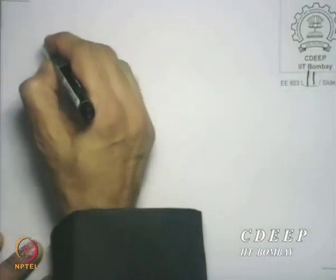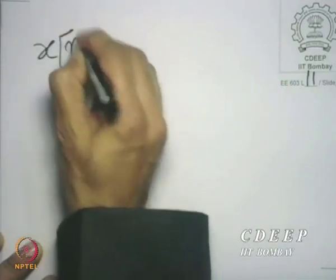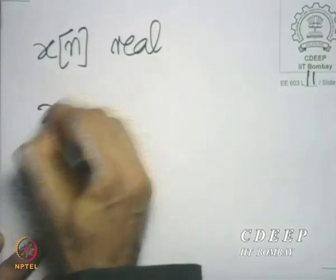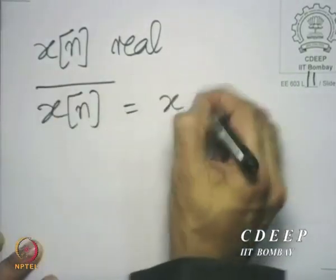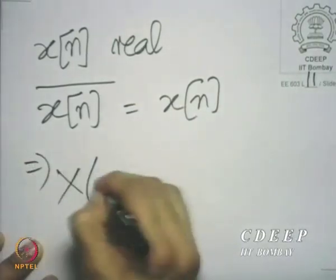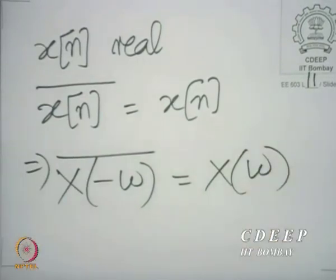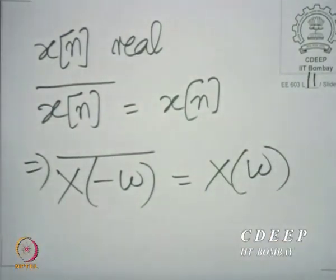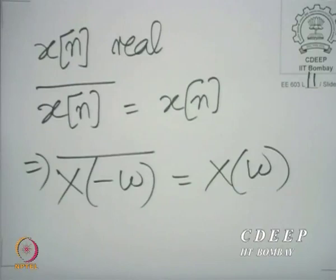This leads us to a very interesting conclusion. If I take x[n] to be a real sequence, then x̄[n] is equal to x[n] — that is what you mean by real. And that means X(-omega) conjugated equals X(omega). So what we are saying is: if you take corresponding frequencies omega and minus omega, they are related by complex conjugation. If you take corresponding positive and negative frequencies, the discrete time Fourier transforms are the complex conjugates of one another.